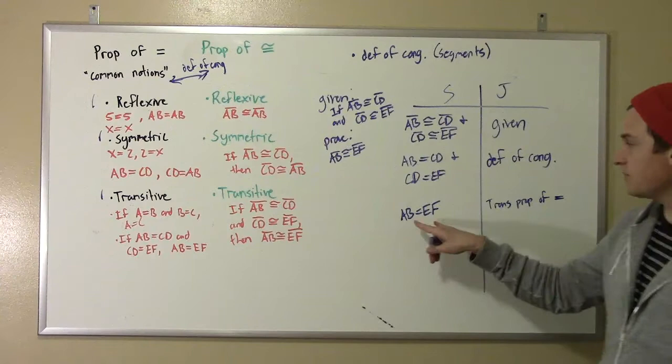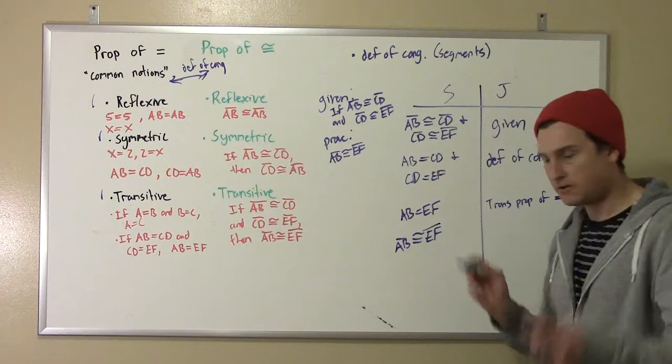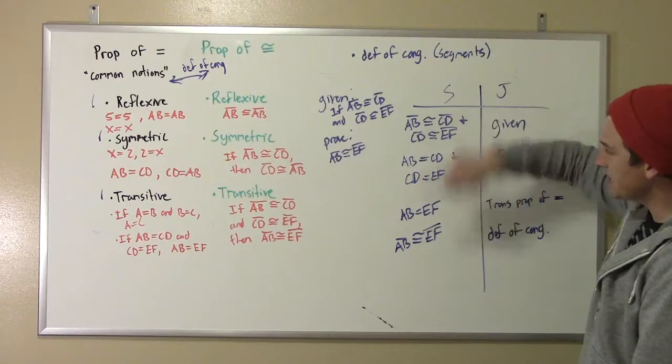And now we just switch right back to congruence. Now that we have two equal segment measurements, we can say that these segments then would have to be congruent to each other. And again, that's the definition of congruence. So what we just proved is starting with this statement, these two congruence statements, we can get this third congruence statement, which proves that these are all just arbitrary segments that we picked.